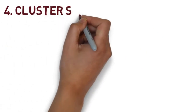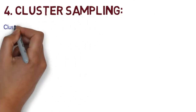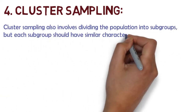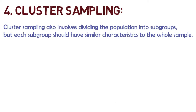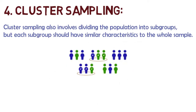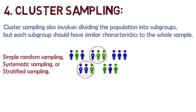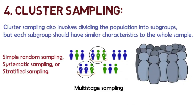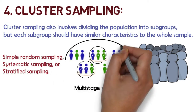Lastly, under probability sampling, we have cluster sampling. Cluster sampling also involves dividing the population into subgroups, but in this case each subgroup should have similar characteristics to the whole sample. Instead of sampling individuals from each subgroup, you randomly select entire subgroups. If practically possible, you might include every individual from each sampled cluster. If the clusters themselves are large, you can also sample individuals from within each cluster — this is called multi-stage sampling. This method is good for dealing with large and dispersed populations, but there is more risk of error as there could be substantial differences between clusters, making it difficult to guarantee that the sampled clusters are truly representative of the whole population.